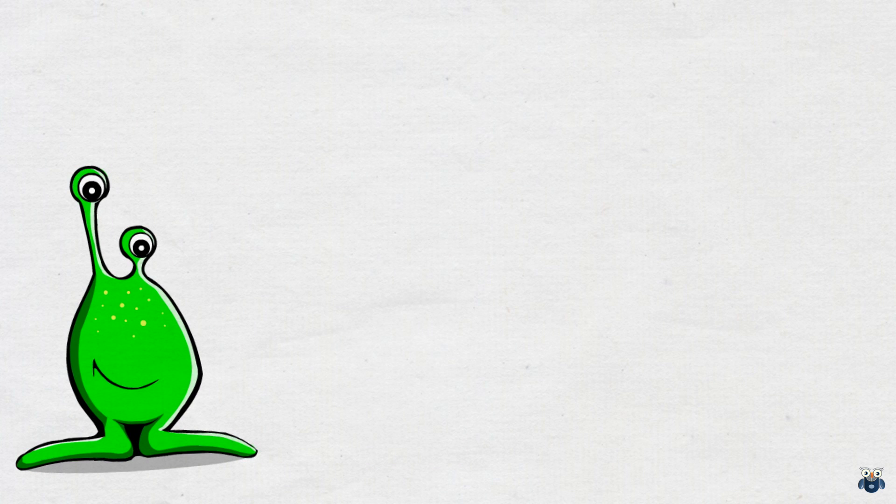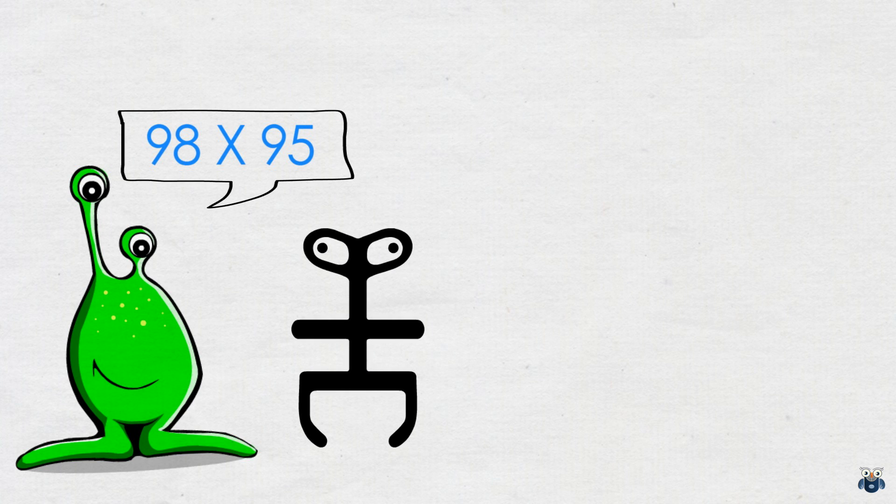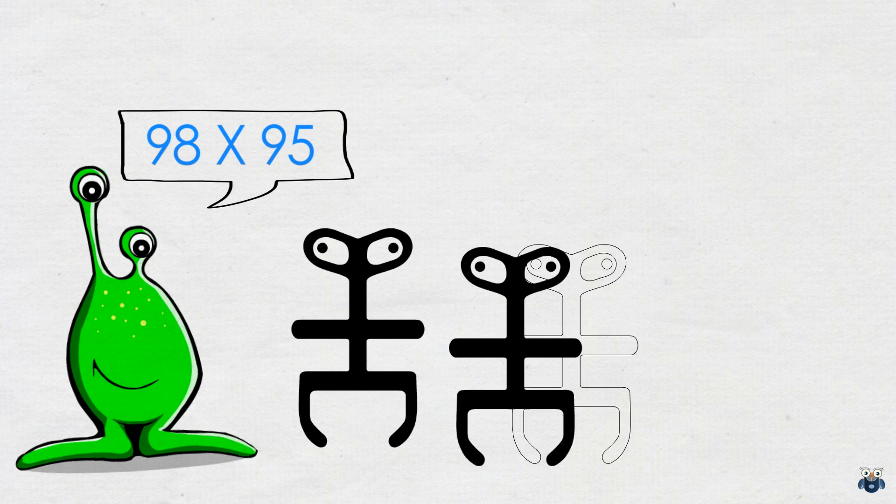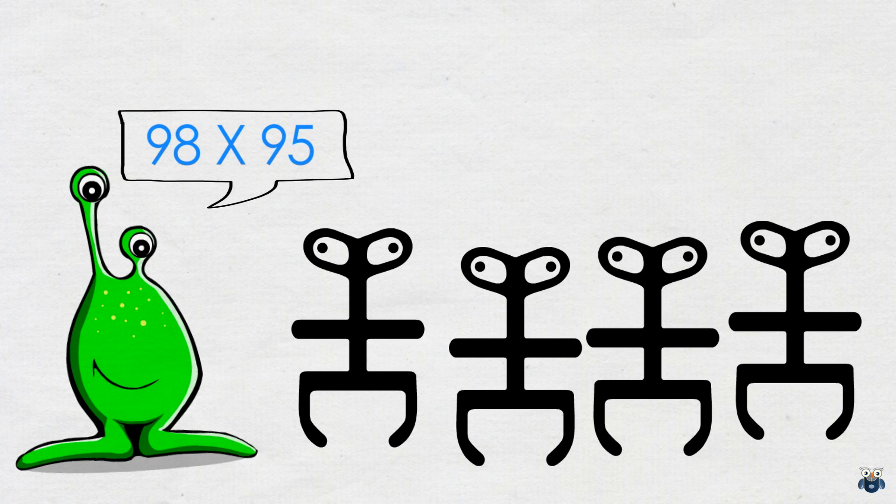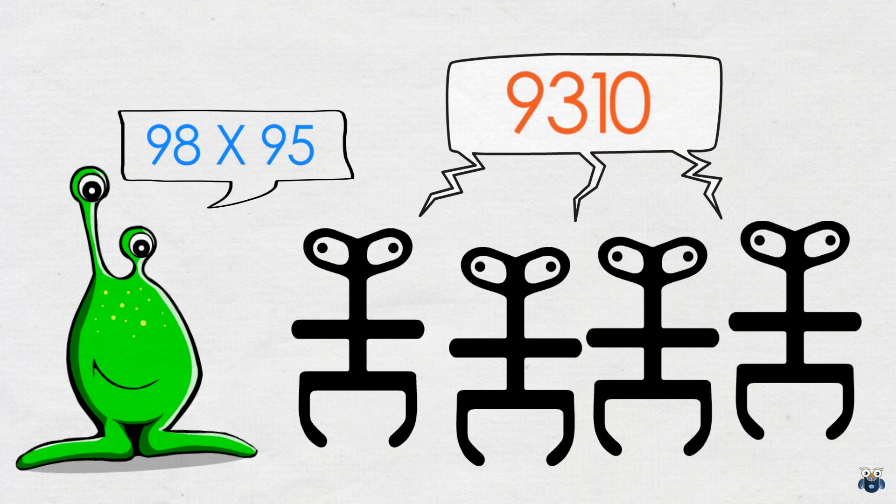Let me give you an example. What is 98 times 95? Using the method I'm about to demonstrate, you could arrive at the answer mentally in a few seconds. The answer in this case is 9310.